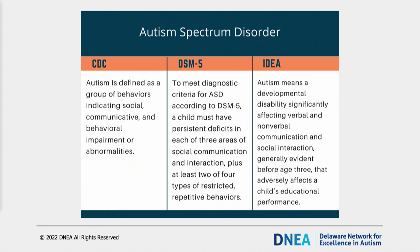Before we discuss common characteristics of autism, it may be helpful to review the different ways autism is described. There are three different descriptions: by the CDC, the DSM, and IDEA. The Diagnostic and Statistical Manual of Mental Disorders is the handbook used by healthcare professionals to guide the diagnosis of mental disorders — it contains descriptions, symptoms, and other criteria used for diagnosis. We say that a child has a diagnosis of autism when the DSM criteria were used to diagnose that child.